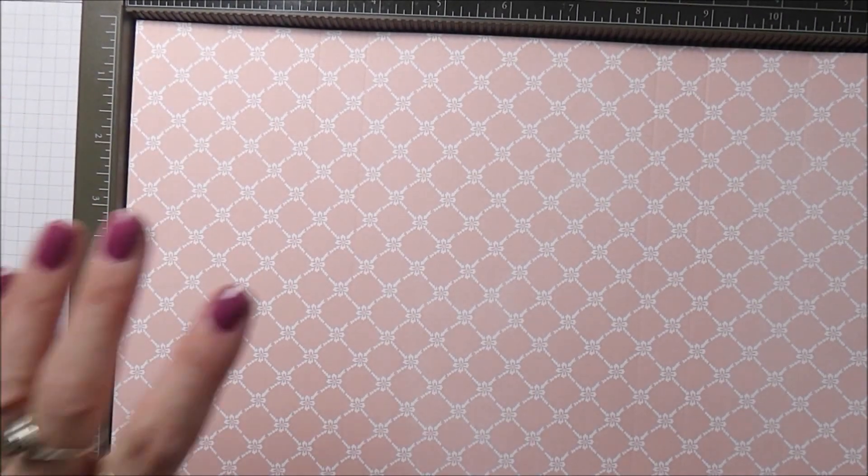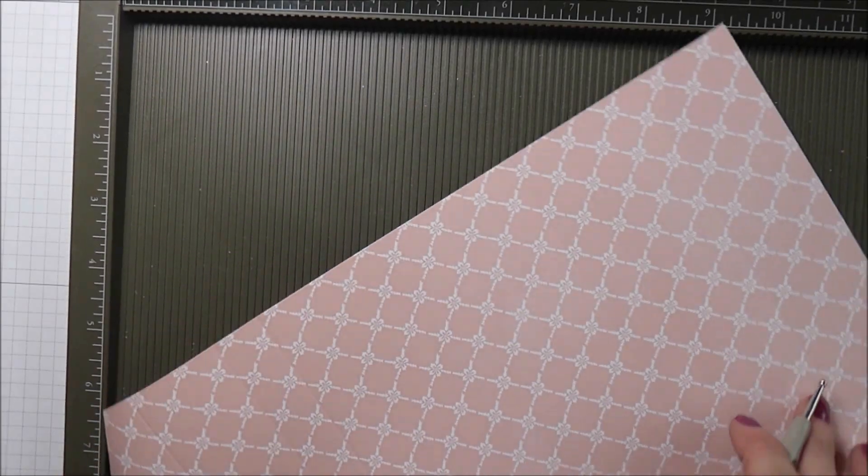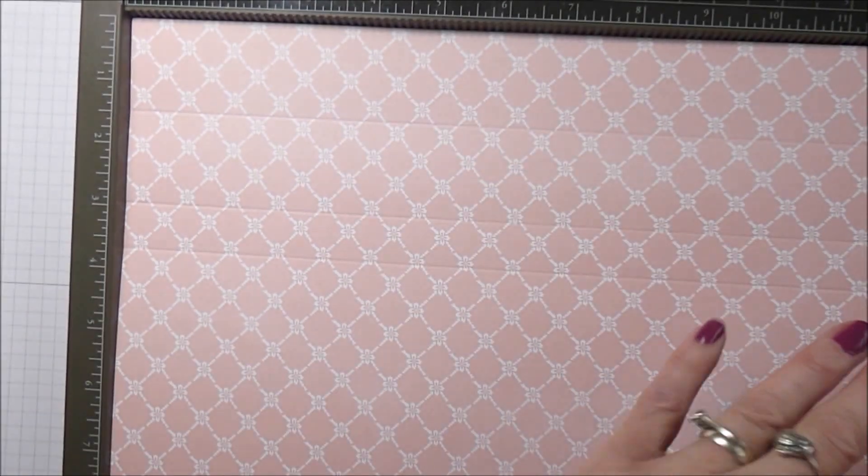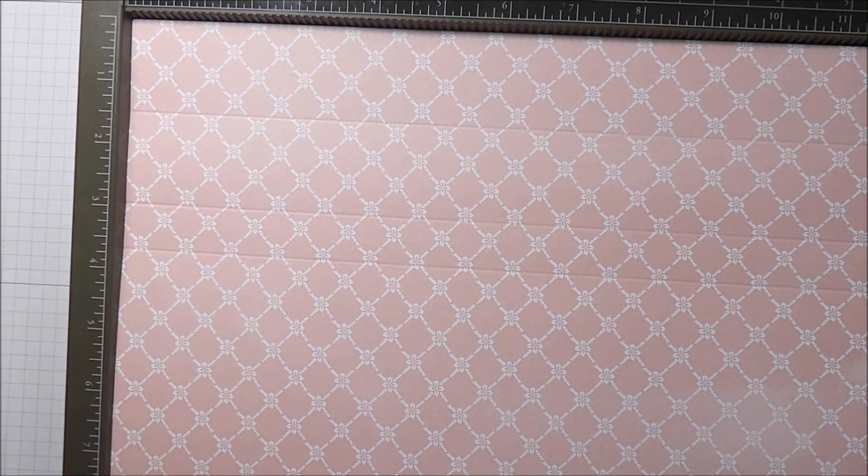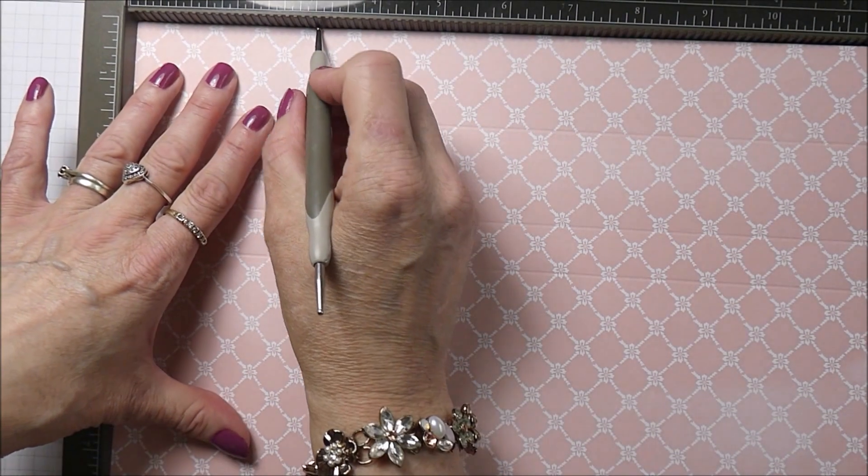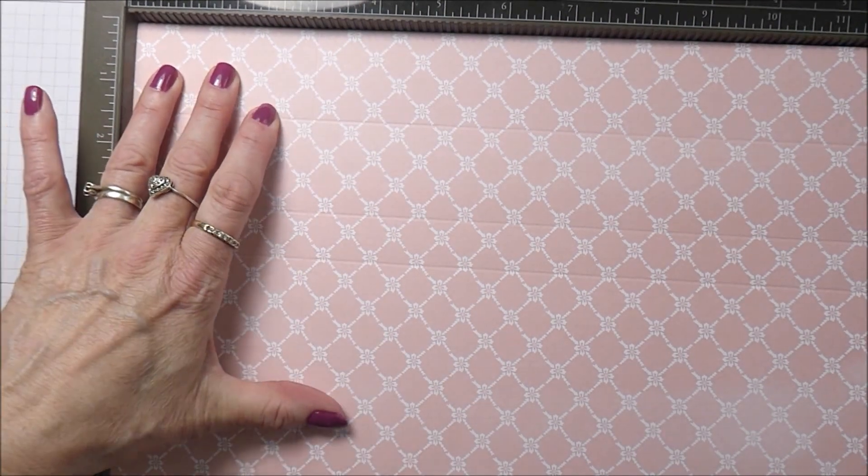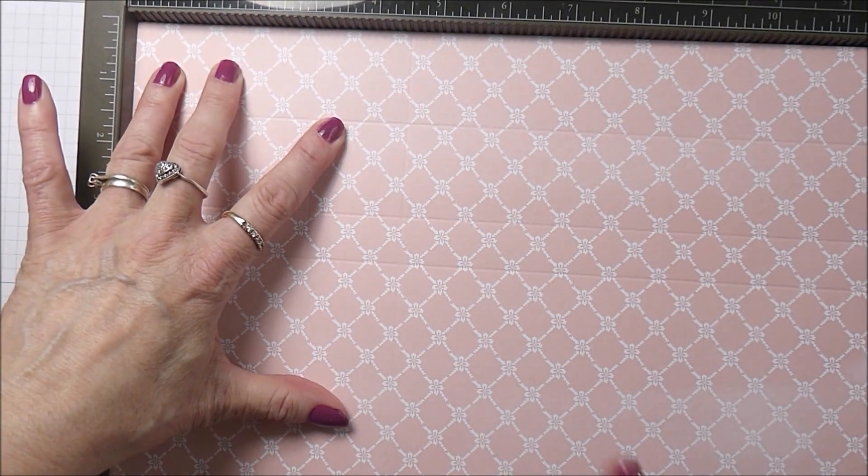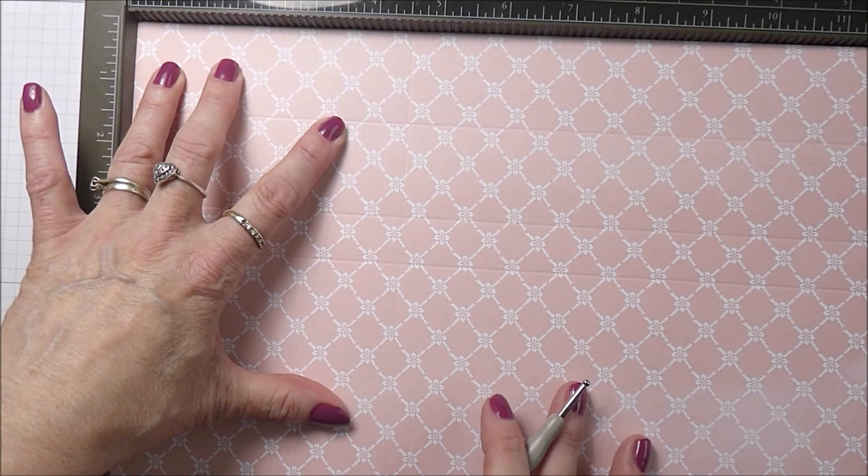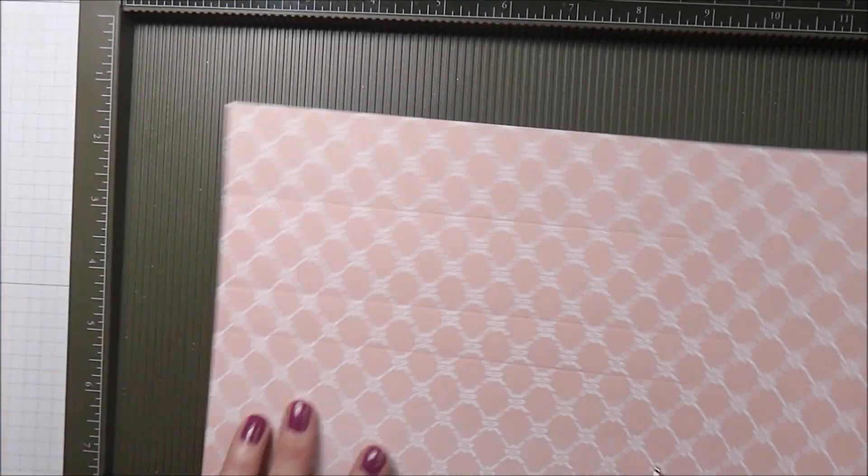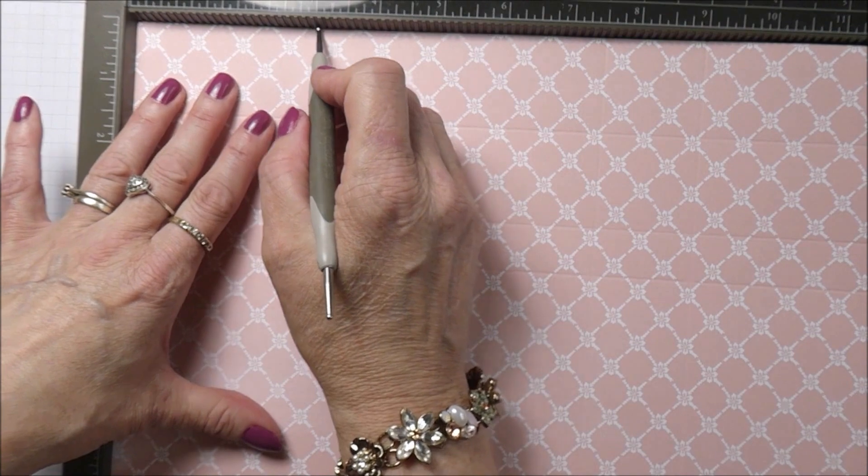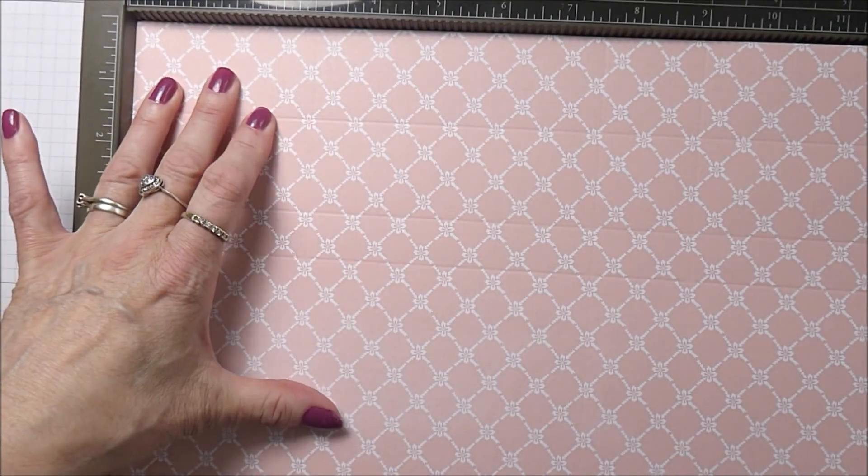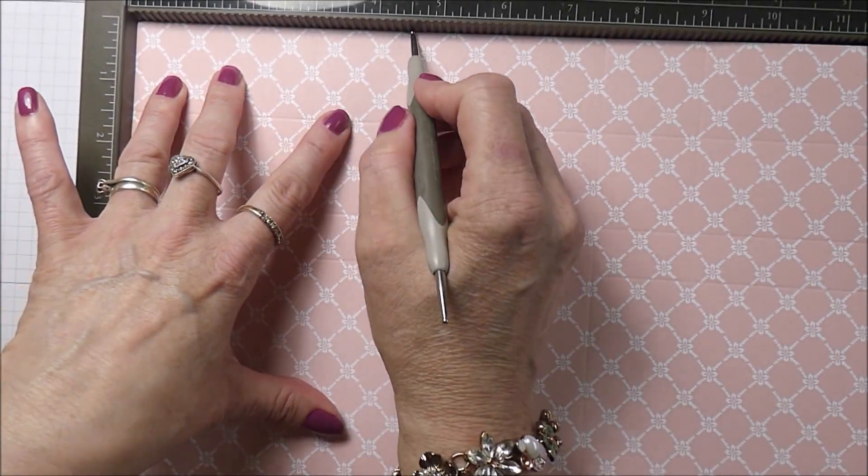Now we're going to turn the paper 90 degrees so those vertical score lines are now horizontal, and you're going to score at three inches and at four and a half inches. Then turn it 180 degrees again and score again at three inches and at four and a half inches.